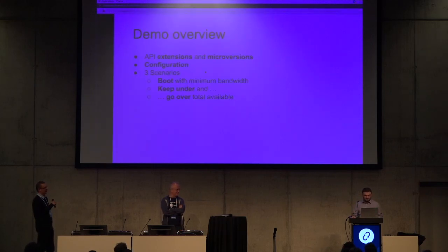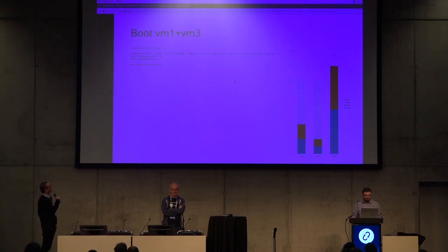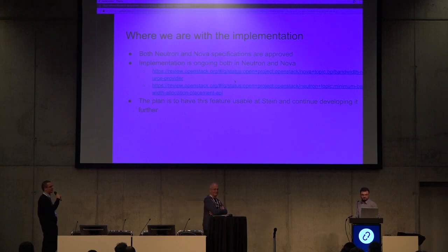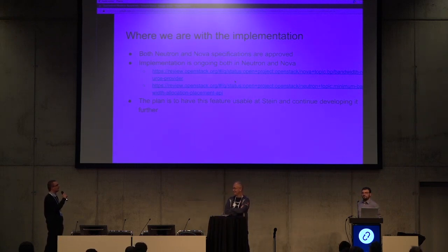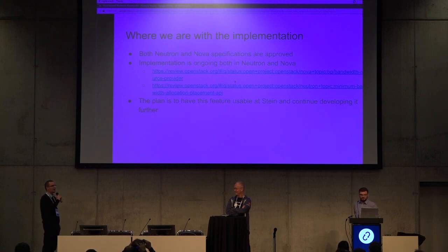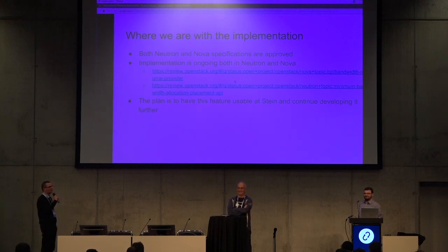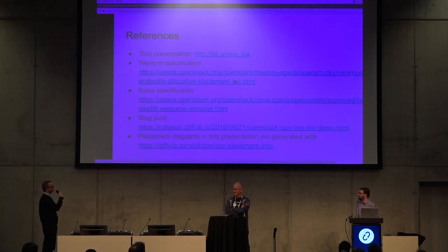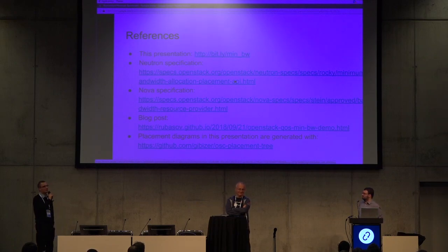Let me jump back to the slides. What you saw is work in progress. Most or all of what's in the demo is available as either merged code or code under review — you have the links on the slide. But there are things not working yet: you cannot live-migrate VMs that have minimum guaranteed bandwidth, and you cannot use multi-segment Neutron networks with this feature. We will be working on those as we progress. On the last slide you'll see many references to read more, including specs. Benz has already published a blog post about the demo technicalities so you can reproduce the demo in your own environment.